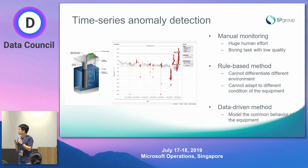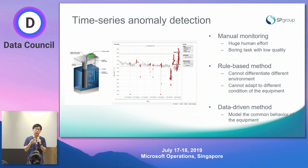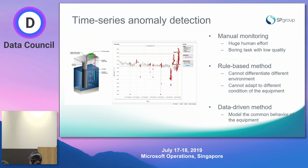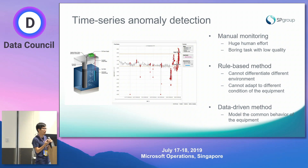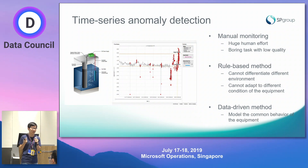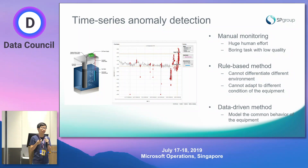One important step for condition monitoring is anomaly detection, which focuses on identifying data points that do not conform to the normal expected behavior of the system or process. In general, there are three types of anomaly detection methods. The first is manual methods, which rely on manual inspection by humans — they require a lot of human effort, cannot scale to large volumes of data, and the inspection quality normally degrades after the initial period, as staff find it tedious and unsustainable.